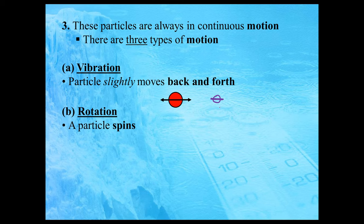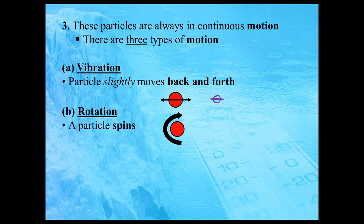Rotation is where we have a particle that spins. An example is if you have a globe and you just spin it — the actual globe isn't changing position but a point on the surface would change. If I looked at a point X at the bottom of the atom and the particle spins clockwise, then later point X would be somewhere up at the top. Another example of rotation would be spinning a basketball on your finger. So rotation is just spinning, but your overall position is not really changing.